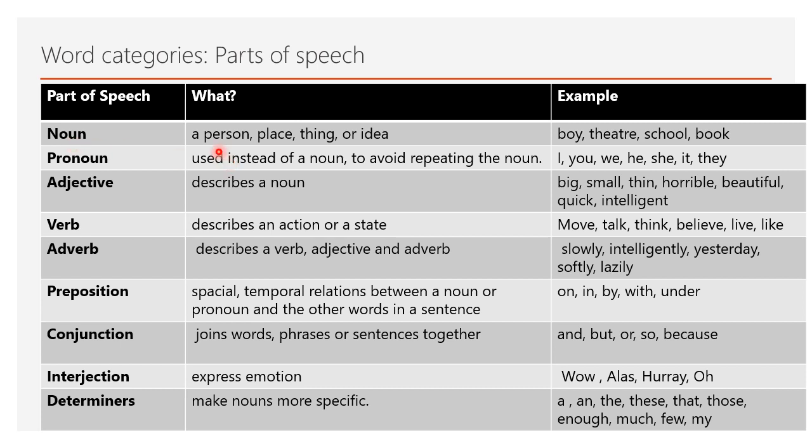Nouns represent a person, place, or thing. Book, gender, girl, school, college. Pronouns. Pronoun is used instead of a noun. I, you, we, he, she. Adjective. Adjective describes a noun. A beautiful girl. Girl is a noun and beautiful is an adjective that describes the girl.